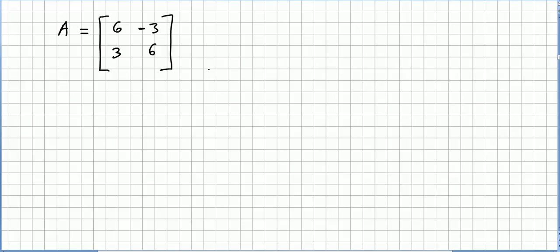Let us pick an example. I took this matrix A: 6, minus 3, 3, 6. Let us see if this matrix is a normal one.